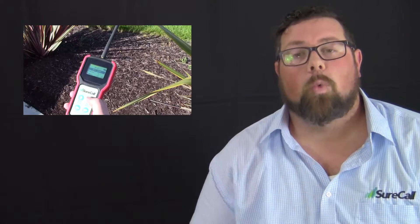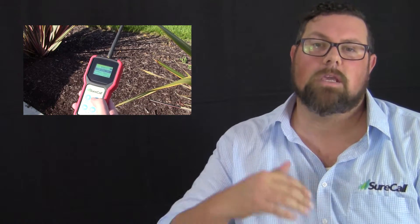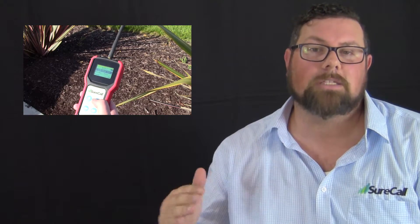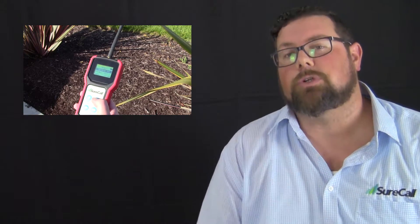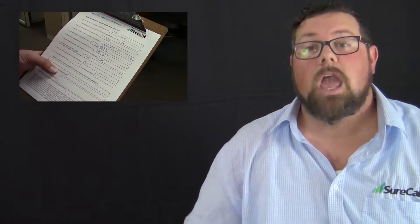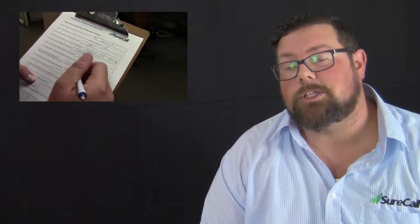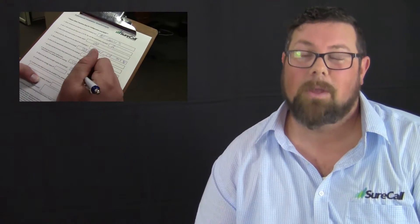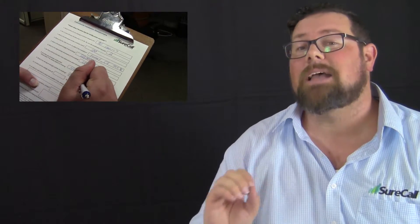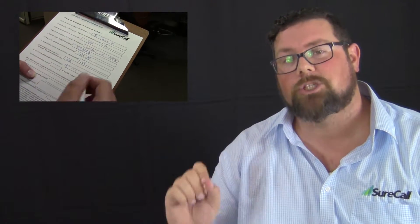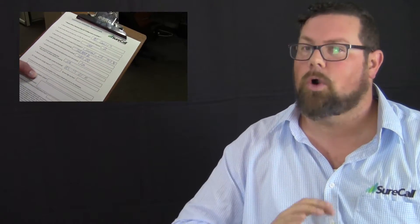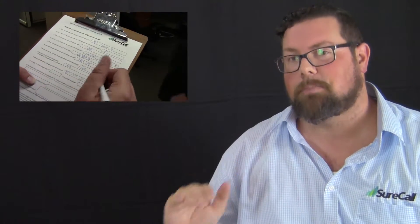When you're recording your signal strength readings outside with your signal meter, most likely you're going to be using Mode 2, because you're going to want to make sure that you get the signal readings for the different blocks in the different bands that the signal booster is going to be amplifying. If you're going to be using SureCall's free configuration assistance program, you really need to make sure that on that site survey you have every question answered completely — not just things like 'see floor plans' or 'unknown.' Make sure that it's complete.